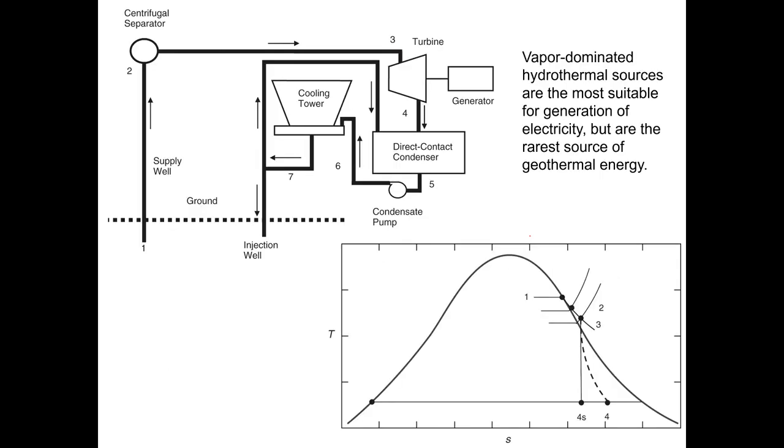Here's an example of a vapor-dominated hydrothermal source. These types of sources are the most suitable for generation of electricity but are the rarest source of geothermal energy. Here you have a supply well coming where the steam is coming. You have a centrifugal separator, and then this is where the steam is separated.